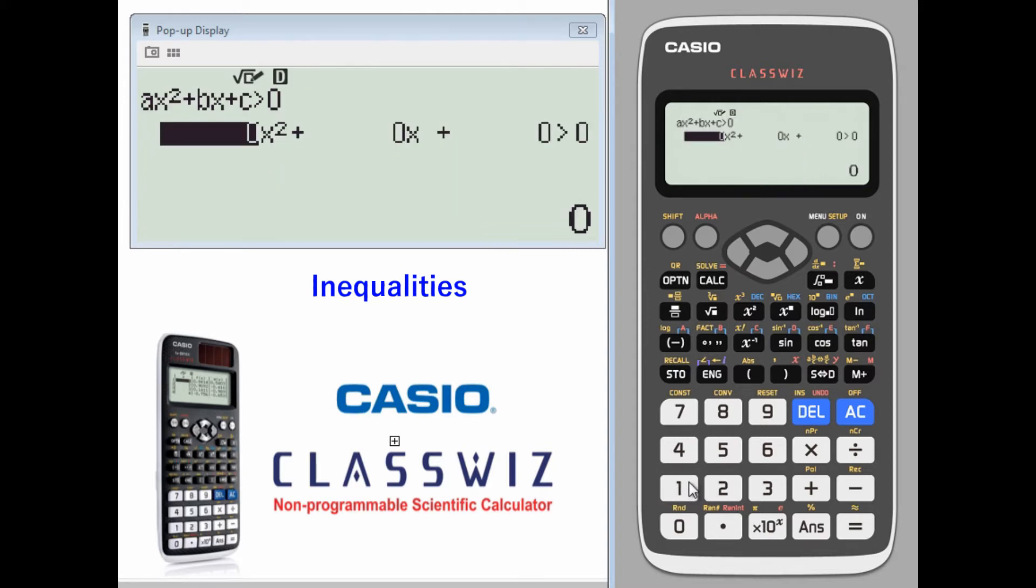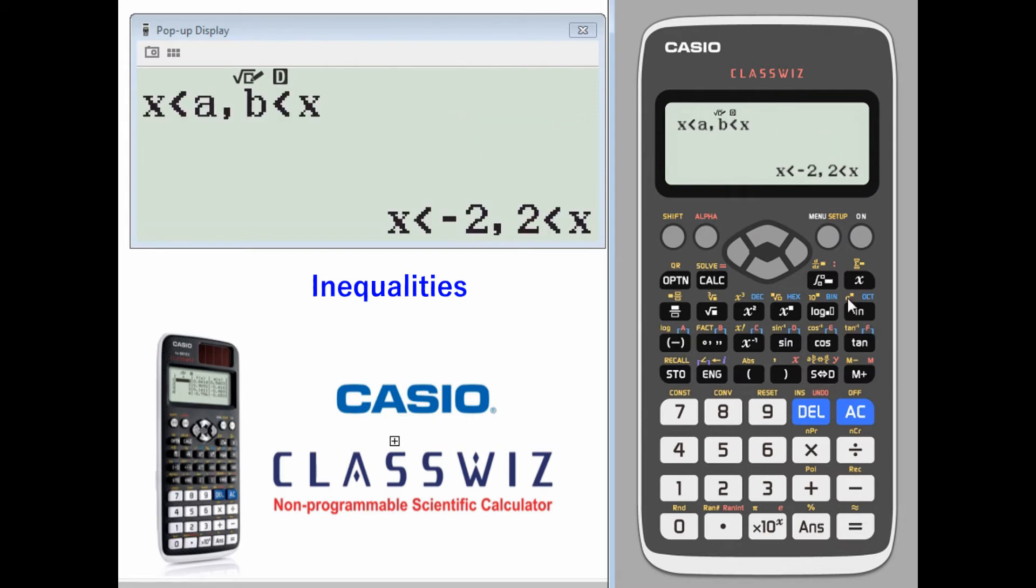For this one, let's try a couple different examples. One, zero for x, negative four for the constant. Press equals. Your solution is x is less than negative two, and two is less than x.